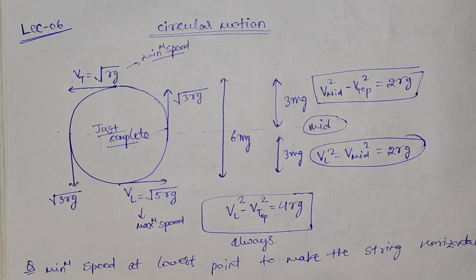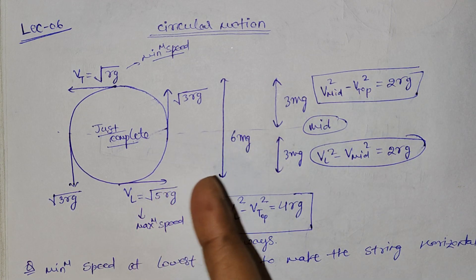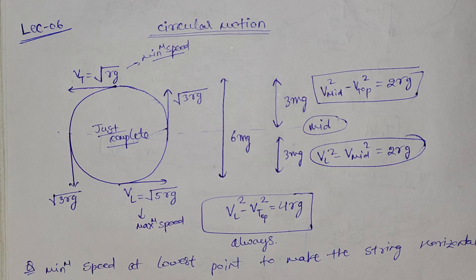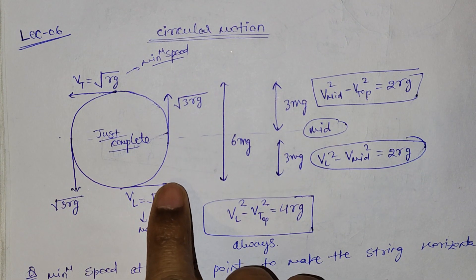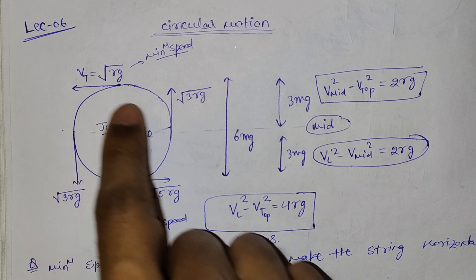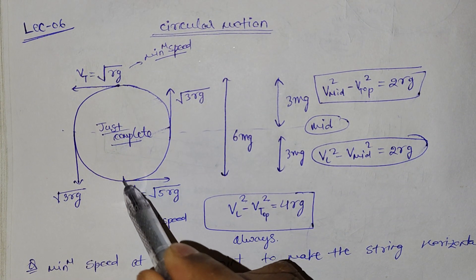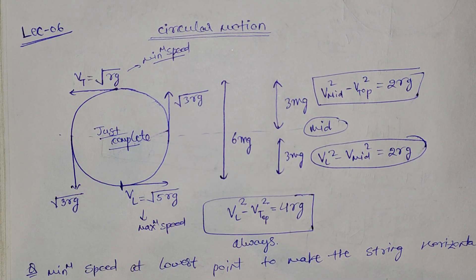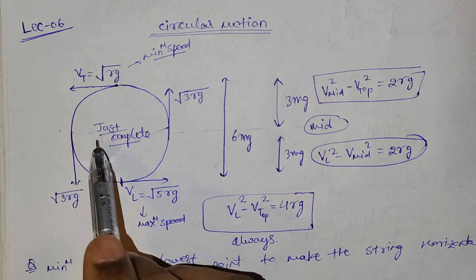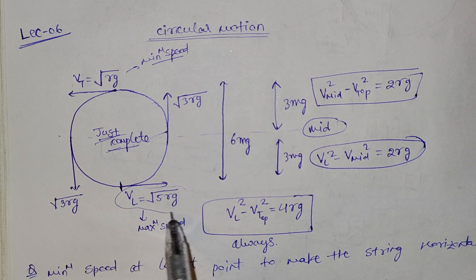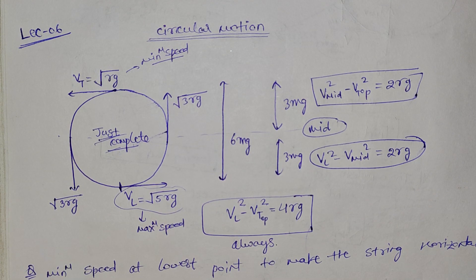Let's revise what we studied in the last class. In vertical circular motion, to complete the circle we talk about the limiting condition. For the lowest point, the minimum velocity to just complete the circle is root(5RG).